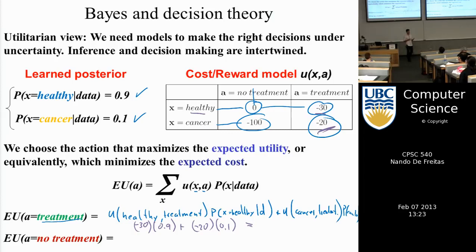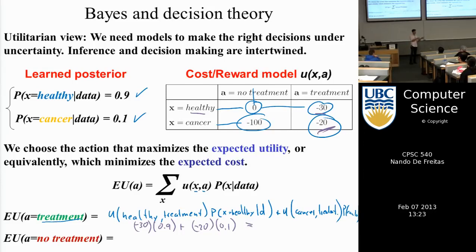Expected utility is not just intuition — it's the conclusion of a theorem. If you have agents with certain conditions on their preferences (e.g., if you prefer A to B and B to C, you prefer A to C), and apply a few basic axioms, you derive expected utility. That is what von Neumann and Morgenstern did in the 1950s — it was the beginning of game theory.